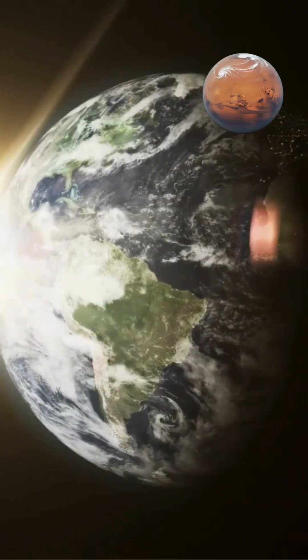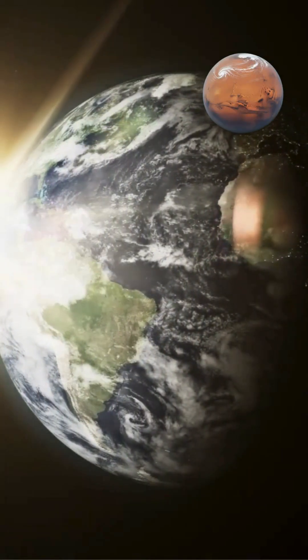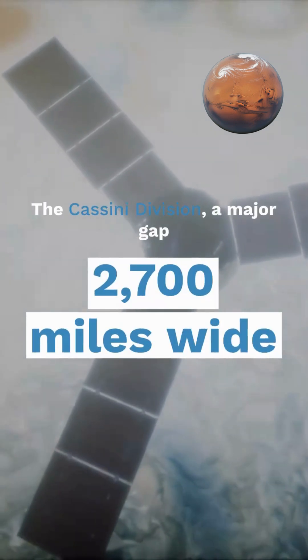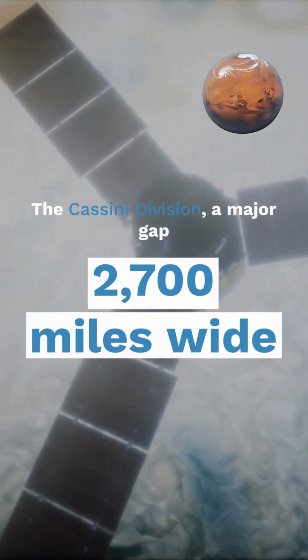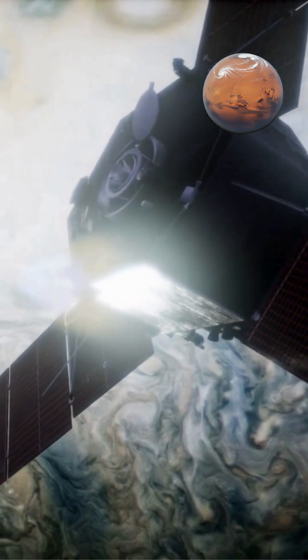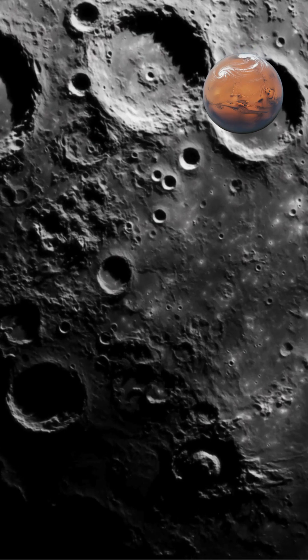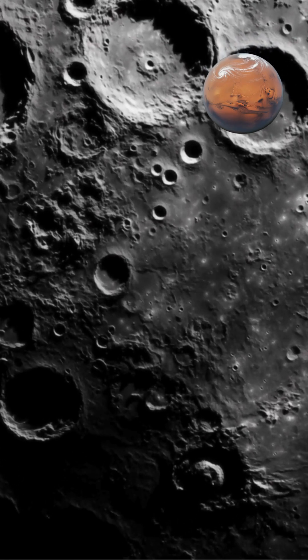Some gaps result from resonances with Saturn's moons, whose gravity influences particle orbits and clears regions of debris. The Cassini division, a major gap 2,700 miles wide, exists because particles in this region experience orbital periods with simple mathematical relationships to Saturn's moon, Mimas, causing them to accumulate gravitational perturbations that eject them from the region.